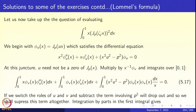We begin again with the definition of φ_u(x). Recall that φ_u(x) is J_p(ux) and it satisfies the differential equation x² φ_u'' + x φ_u' + (x²u² − p²) φ_u = 0. At this juncture, u need not be a zero of the Bessel's function — not yet. Later we will take it to be the zero, but we will also need information about what happens when u is not a zero.